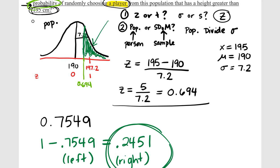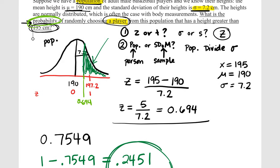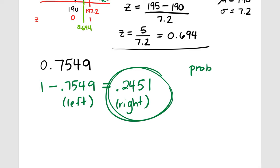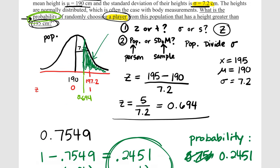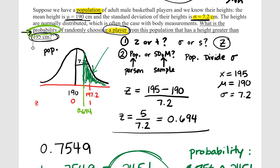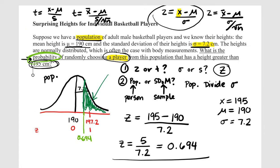This makes sense — it's about 25%, 24% of the curve on the right, and the area to the left is about 75%. So the answer to our question — what is the probability of randomly choosing a player from this population with a height greater than 195? — that probability is 0.2451, or about 24.51%. So almost a 25% chance that if we pull a random basketball player they're going to be at least 195 centimeters tall. That's our first example, looking at individual basketball players.